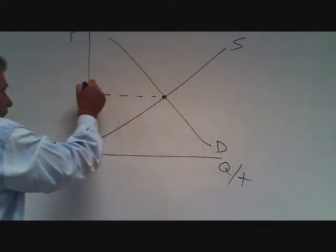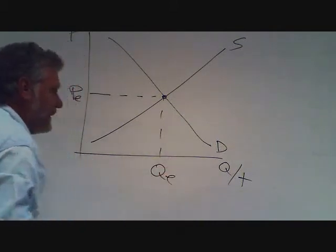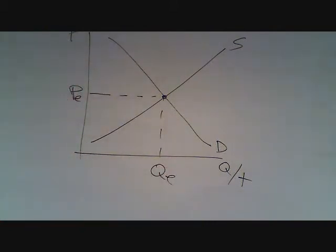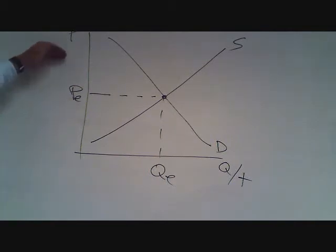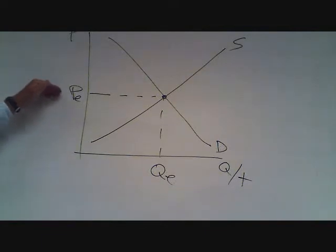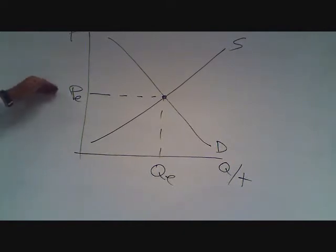The equilibrium price-quantity combination is determined by the intersection of the supply and demand curves. If the price was higher than PE, there would be a surplus, and the surplus would force the price back down to PE. If the price was less than PE, there would be a shortage, and the shortage would make the price rise until it got back to PE. PE is the equilibrium price.